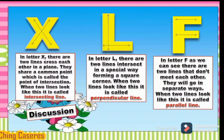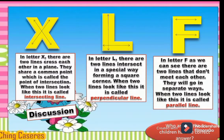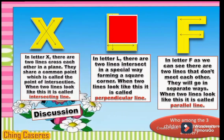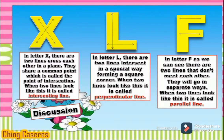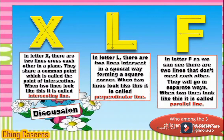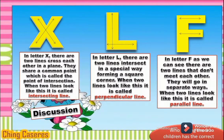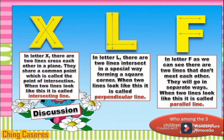Let's analyze the problem. In letter X, there are two lines that cross each other in a plane — they share a common point called the point of intersection. This line is called an intersecting line. In letter L, two lines intersect in a special way forming a square corner — this is called a perpendicular line. In letter F, two lines do not meet each other; they go along their own way — this line is called parallel lines. So from the given problem, Qian got the correct letter with the intersecting line.